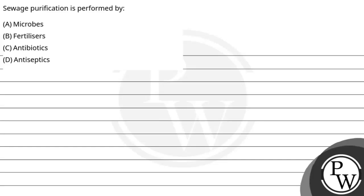Hello guys, let us read the question. The question says: sewage purification is performed by — first option is microbe, second option is fertilizer, third option is antibiotics, and last option is antiseptics.